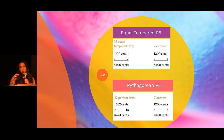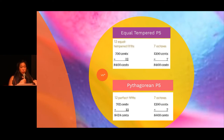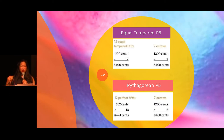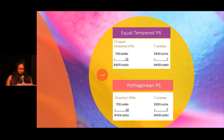So you have 702-cent Pythagorean perfect fifths times 12, and you come up with 8,424 cents. It still covers the range of seven octaves — 1,200 times 7 gives you 8,400 — but those don't equal each other. We are now in excess of 24 cents. What are we going to do with these 24 cents?